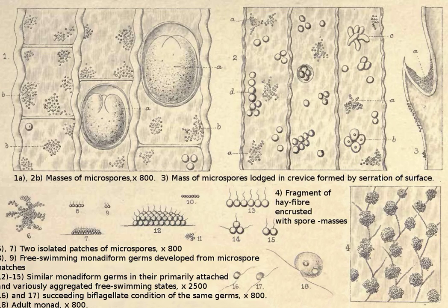Chimera lens is a unicellular, flagellate organism and the only species in the genus Chimera. Though the species has been known for centuries, it is poorly understood. Its systematic position within the eukaryota is uncertain.